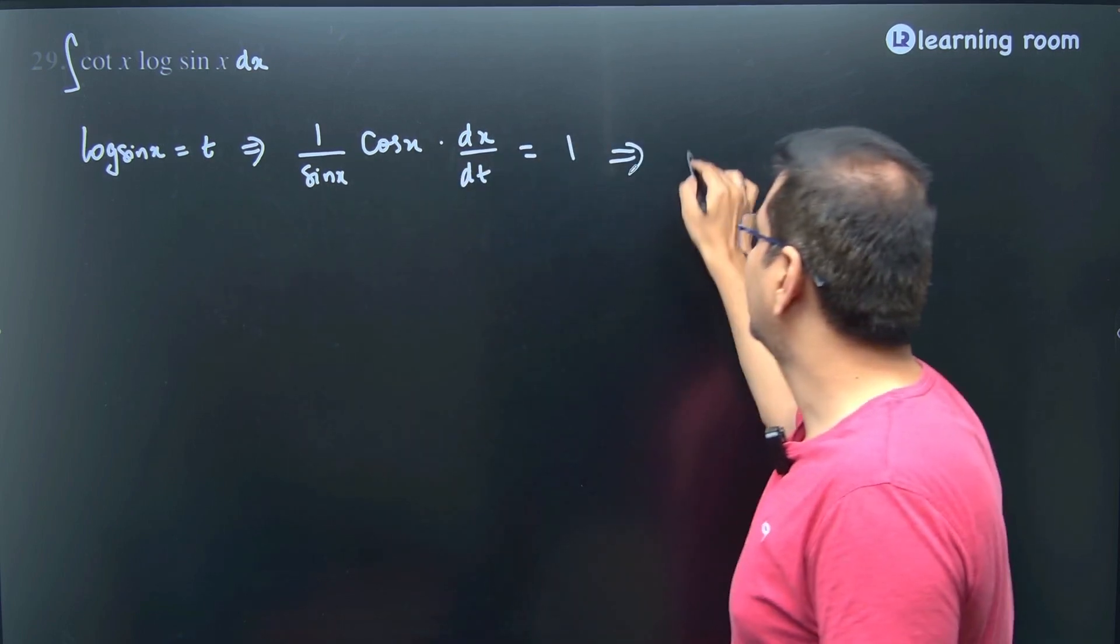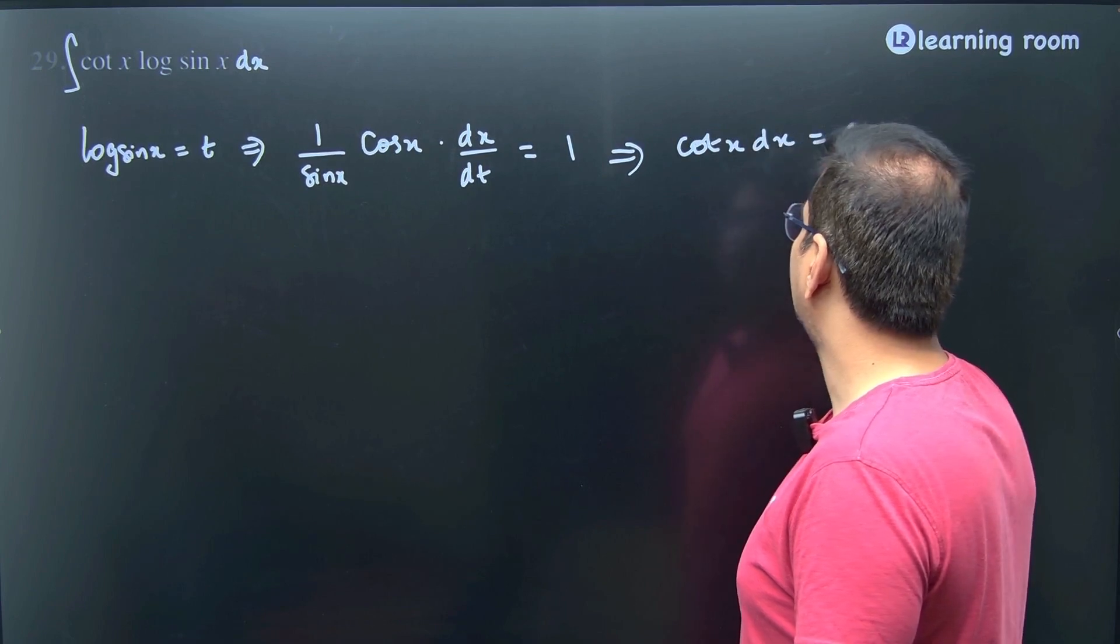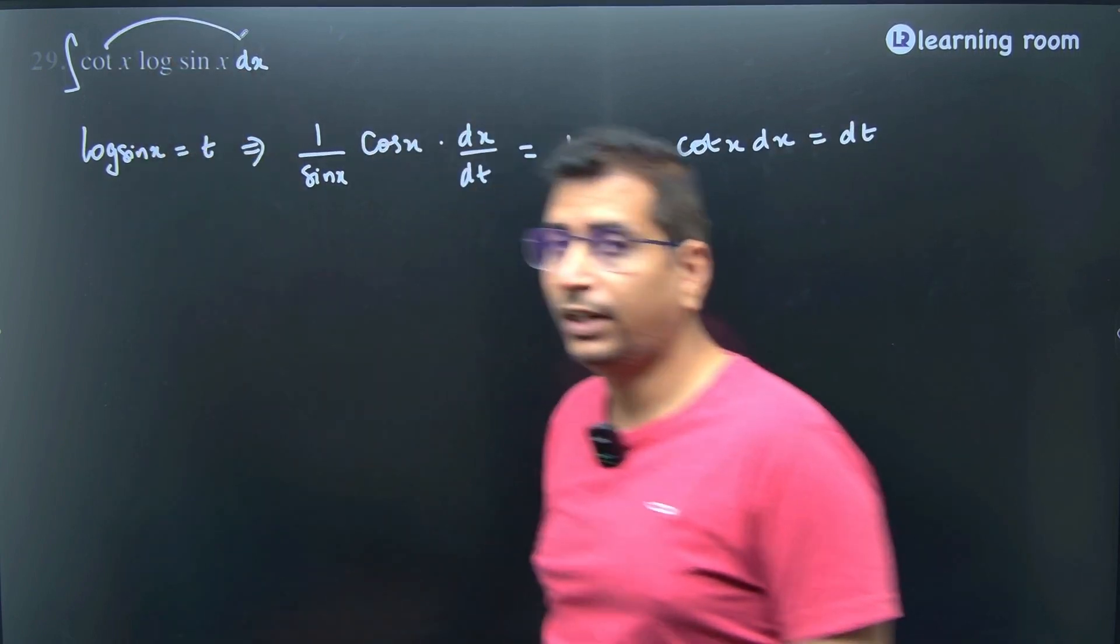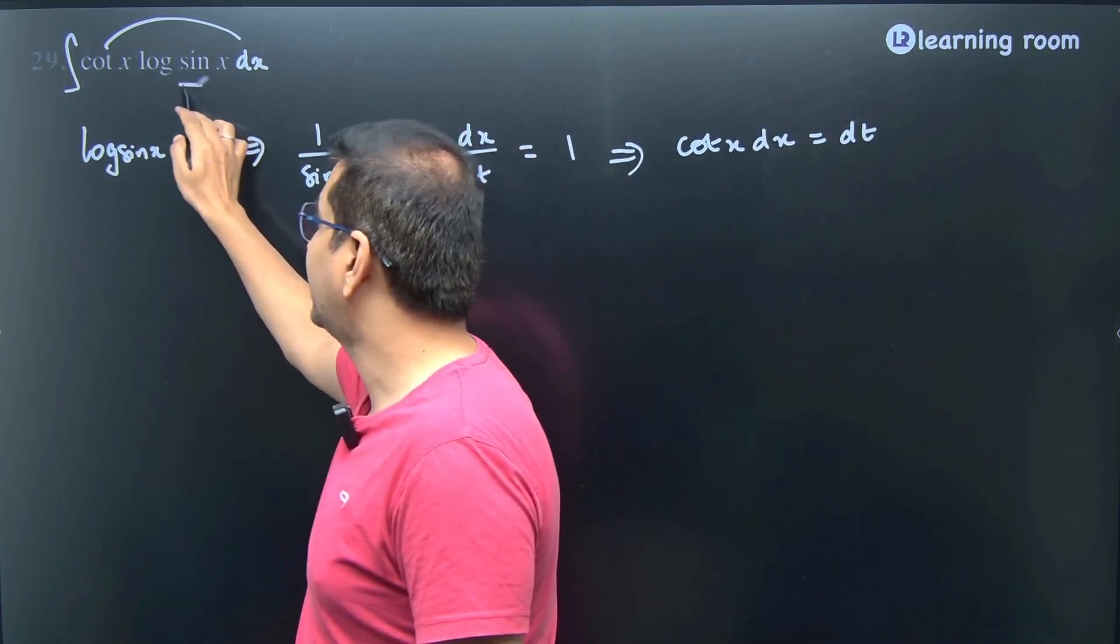cos x divided by sin x is cot x. So cot x times dx is equal to dt, and log of sin x is t.